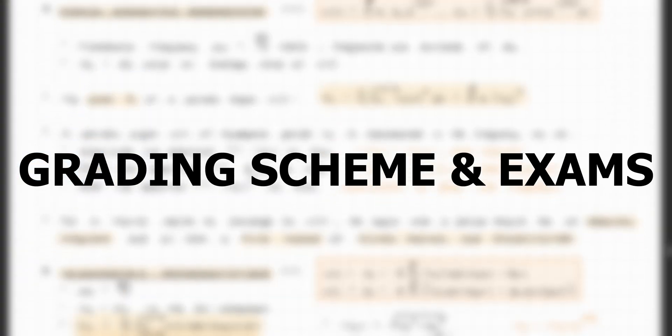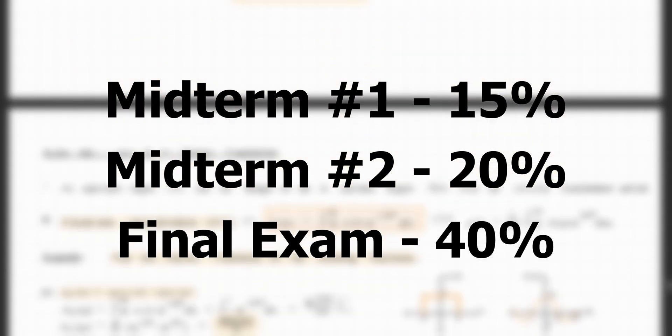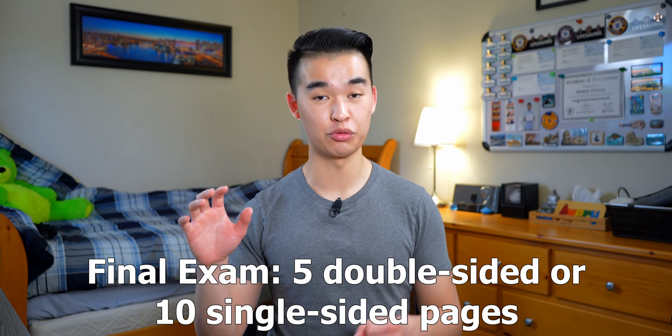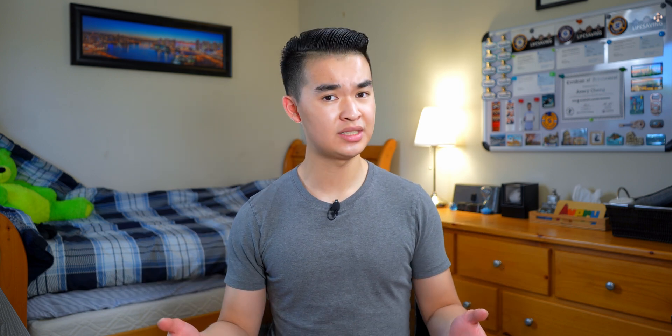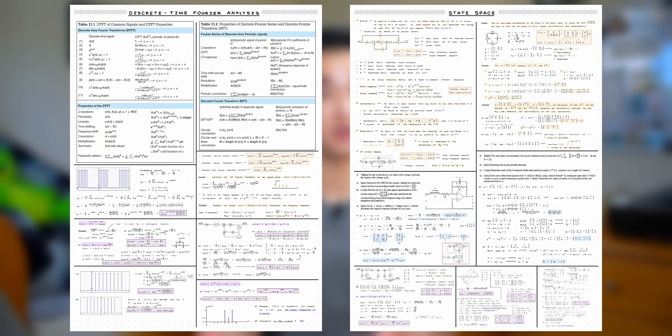In terms of the grading scheme for ELEC 221, your in-class tutorial activities are weighted at 10% of your overall grade, and your 10 Webwork assignments are weighted at 15%. If you do not participate in any of the in-class tutorial activities, this weighting will automatically be shifted to your final exam. You will have 2 midterm exams worth 15% and 20% respectively, and a final exam worth 40%. No calculators are allowed for these exams, and you're allowed to bring your own formula sheets to the second midterm and the final exam, with no restrictions on content or format. For our second midterm we were allowed 5 single-sided pages, and for the final exam we were allowed 5 double-sided pages. My final exam formula sheet was pretty much a matter of cramming all my notes and as many solutions to past exam questions as possible onto it.